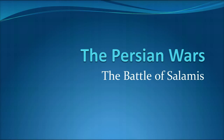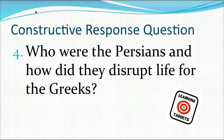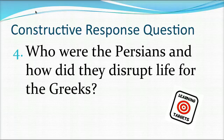We're going to take the same approach with this lecture that we did the previous two. We're going to look at the five W's — the who, the what, the why, the when, and the where of the Battle of Salamis. We have one learning target question we've been working with across the previous two lectures: who were the Persians and how did they disrupt life for the Greeks?